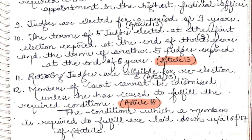Point 11: retiring judges are eligible for re-election. Point 12: members of the court cannot be dismissed unless they have ceased to fulfill the required conditions — those conditions are detailed in Articles 16 and 17 of the ICJ Statute.